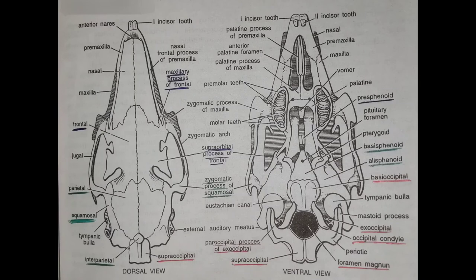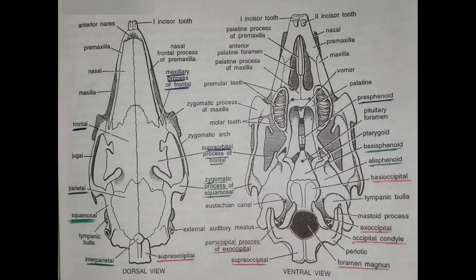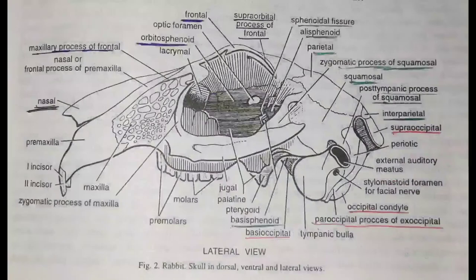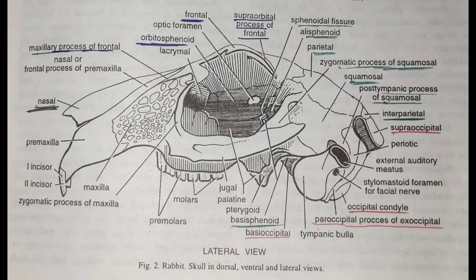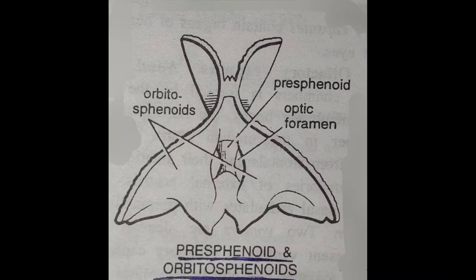A pair of frontals form the roof of the frontal region; the outer middle part of each frontal forms the dorsal boundary of the orbits through its supraorbital process. You can see in the figure the labelling underlined in blue — it is the frontal region. The presphenoid and orbitosphenoid are shown fused together, and the frontals are also shown in both dorsal and ventral views.